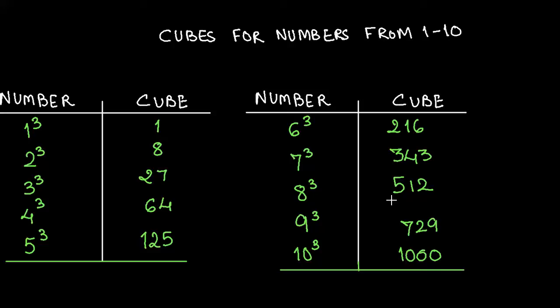9 cube is 729, 10 cube is 1000. Now I would like to emphasize that we touched upon the concept of perfect squares. Similarly these numbers here that we have discussed, that is the cube numbers, finding out the cubes for numbers from 1 to 10 and these numbers here that we have got